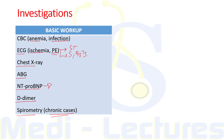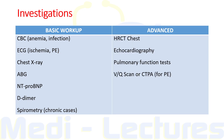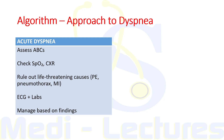If we are unable to identify the cause on basic workup, we move to advanced workup, which includes HRCT chest, echocardiography, pulmonary function tests including DLCO and flow-volume curves, and finally a ventilation-perfusion scan for pulmonary embolism.